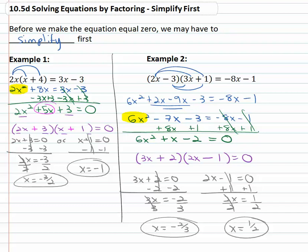Solving equations by factoring, we simplify first, make the equation equal to zero, factor, and set each factor equal to zero.